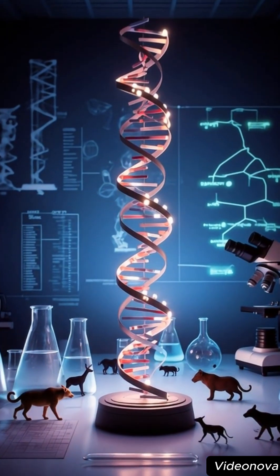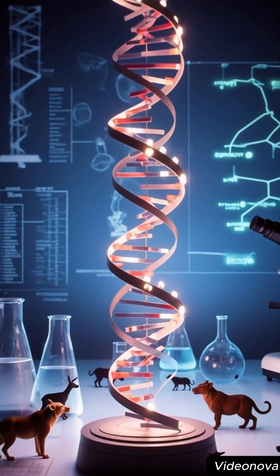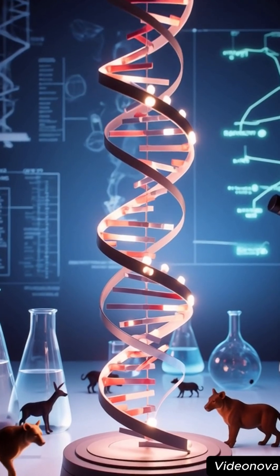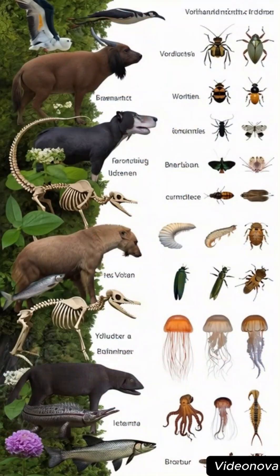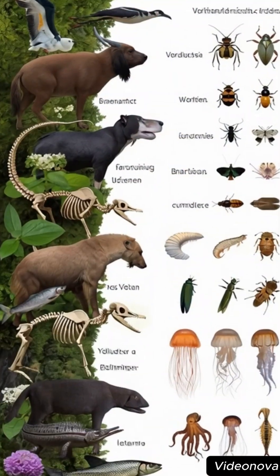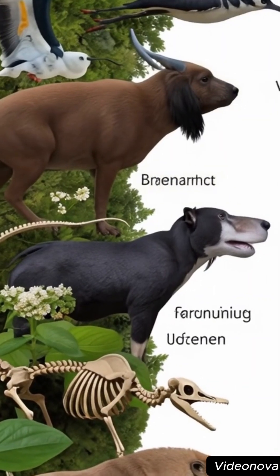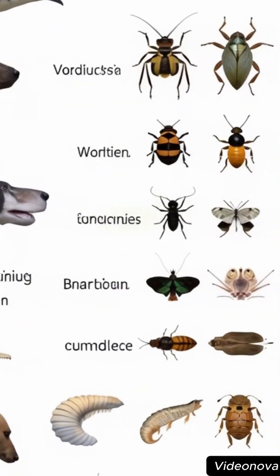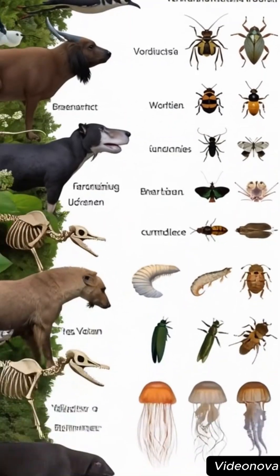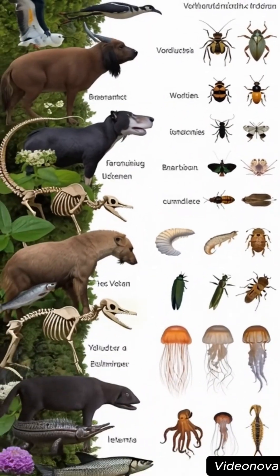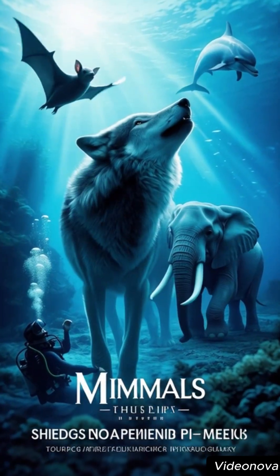Among vertebrates, we find five familiar families: mammals like lions, whales, and humans, who nurse their young; birds, covered with feathers and able — most of them — to fly; reptiles, cold-blooded animals with scaly skin; amphibians, living between water and land; and fish, rulers of the aquatic environment.